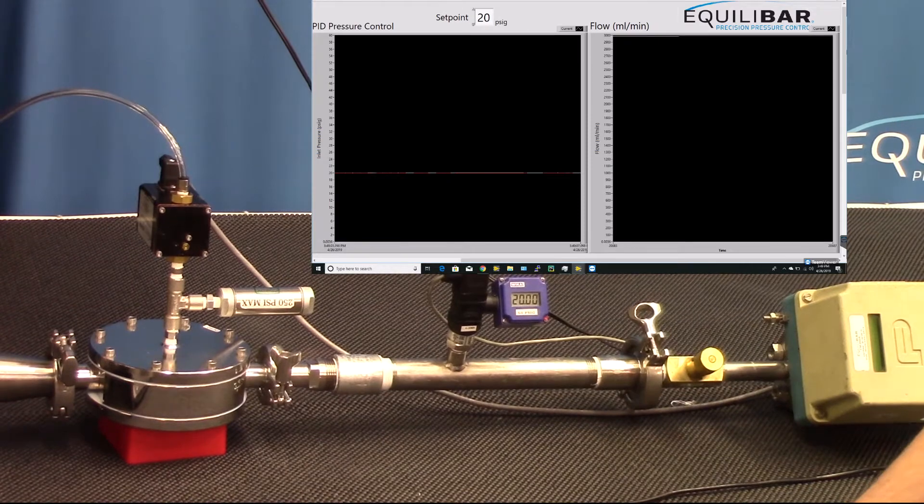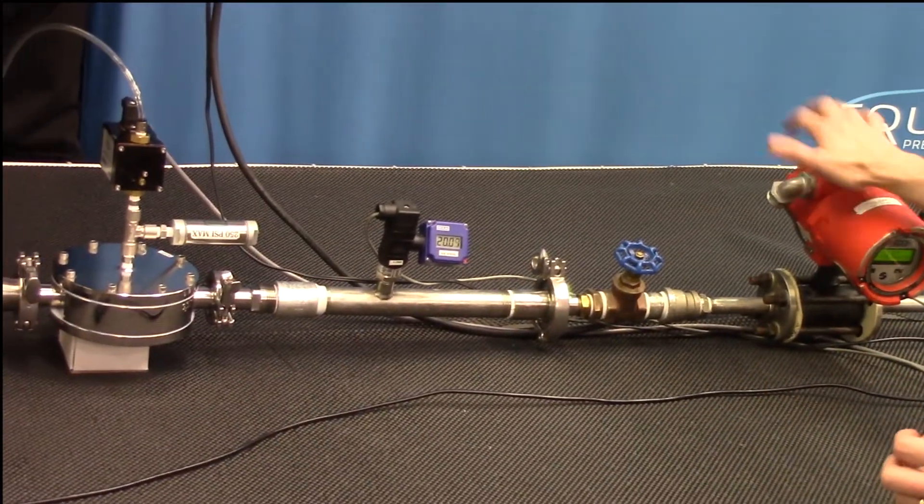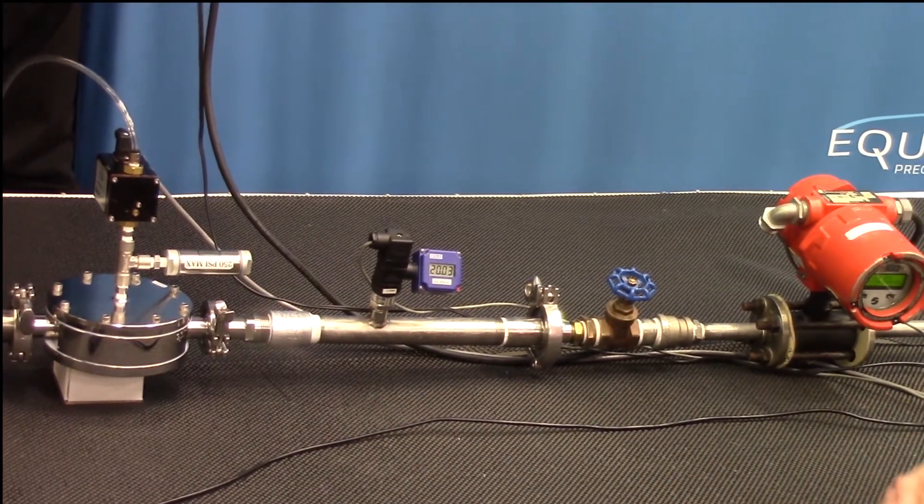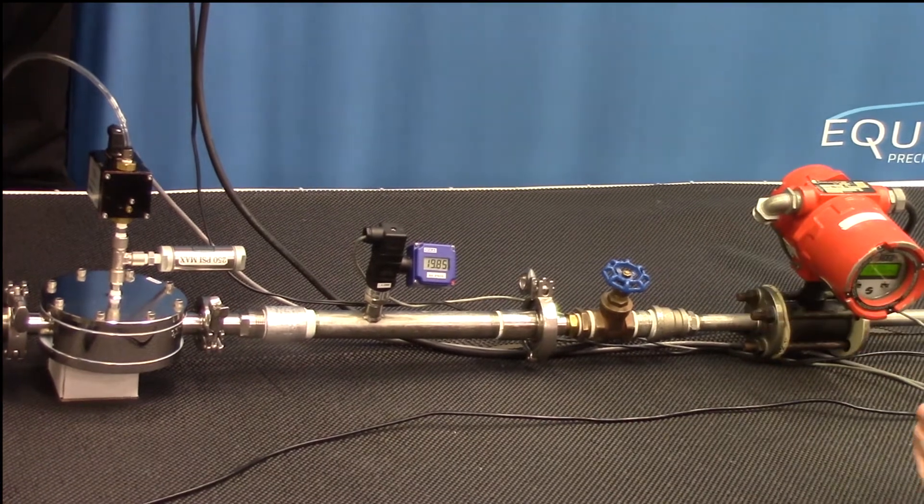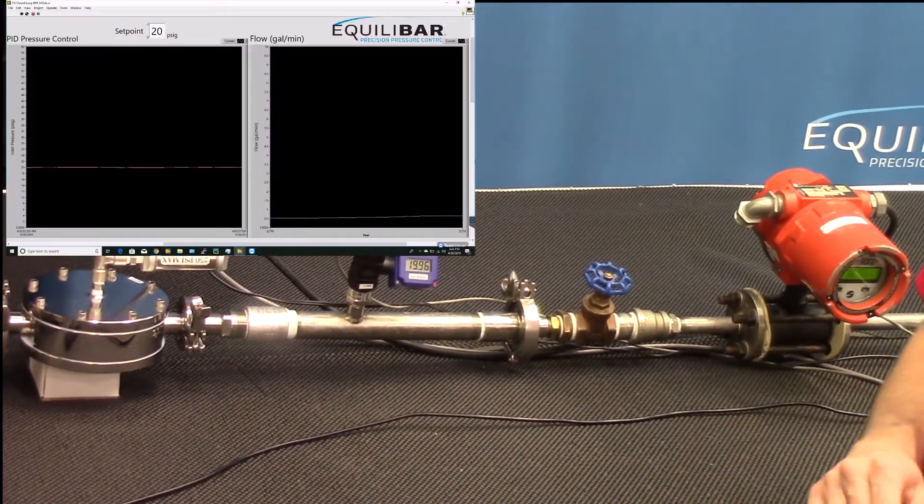Let's now change to a higher flow meter to see even more turndown. All right, so now we've changed the flow meter to a higher flow capacity. This measures flow up to 10 gallons a minute. Where we left off from the last segment, we were flowing at three liters a minute, which is almost 0.8 gallons per minute.